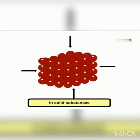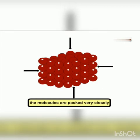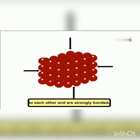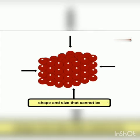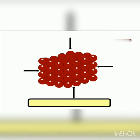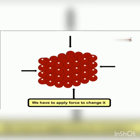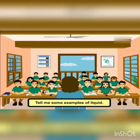In solid substances, the molecules are packed very closely to each other and are strongly bonded. Because of this, solids have a definite shape and size that cannot be changed easily. We have to apply force to change it.